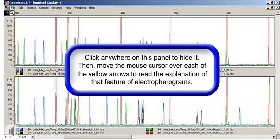Click anywhere on this panel to hide it. Then move the mouse cursor over each of the yellow arrows to read the explanation of that feature of electropherograms.